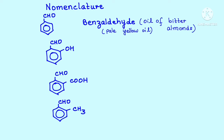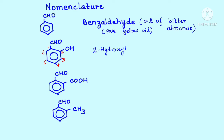So which of the two — CHO or OH — gets preference in naming? Carbon number one will be the one which contains the CHO group, then two, three, four, five, and six. Based on this, the OH over here is the secondary functional group, so I am going to name it as 2-hydroxybenzaldehyde. Have you got it right? Very good, well done. Now try the next one.